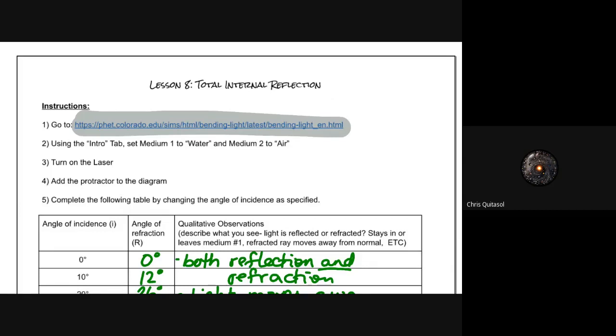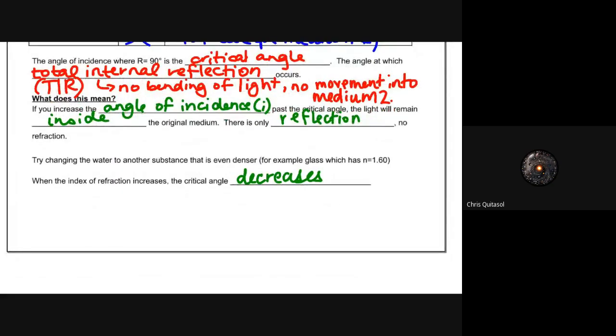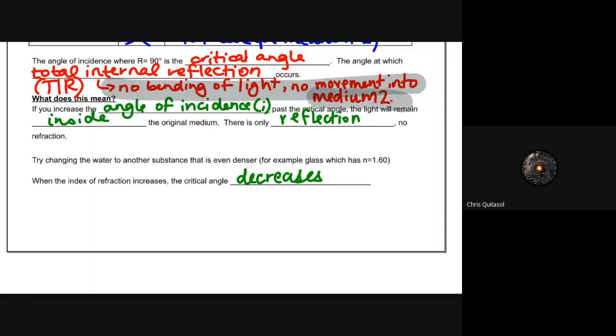Okay, so the one thing that I want to talk about is the critical angle and how it relates to the angle of incidence. When R or that angle of refraction is 90 degrees, that's what's called the critical angle, the angle at which total internal refraction occurs or TIR. That means there's no bending of light and no movement into medium two and we'll talk a little bit more about that with the diagrams moving forward.